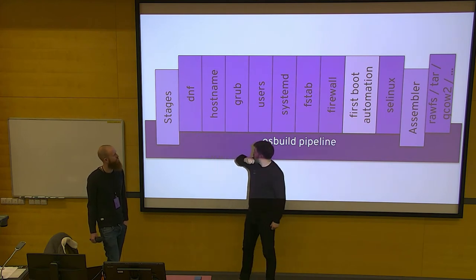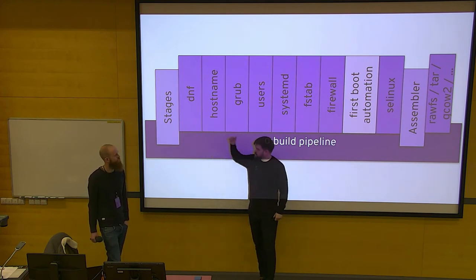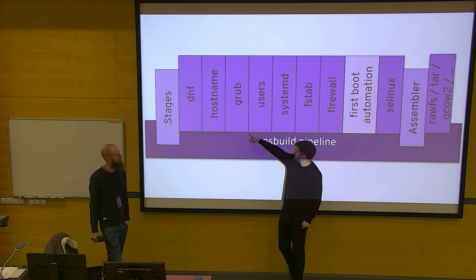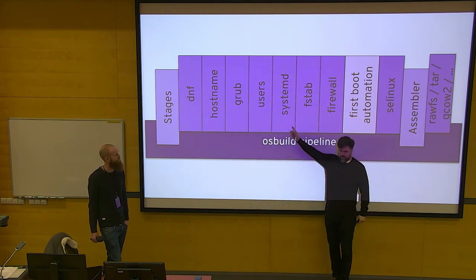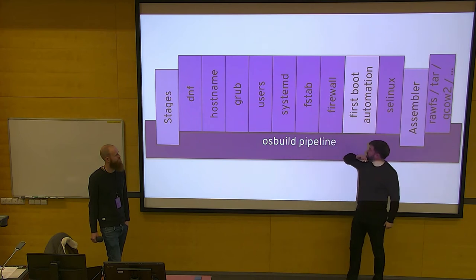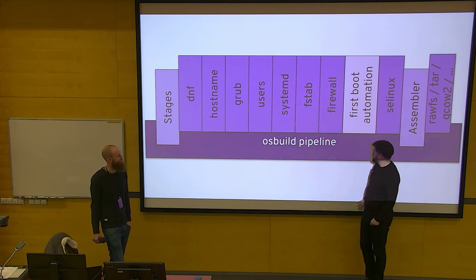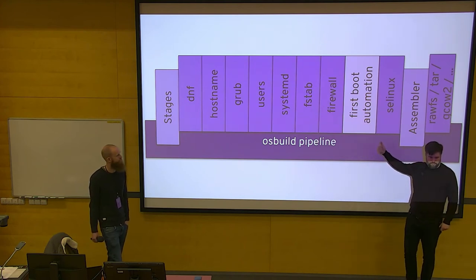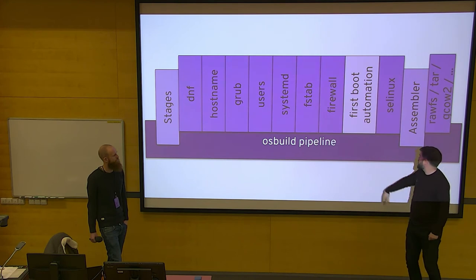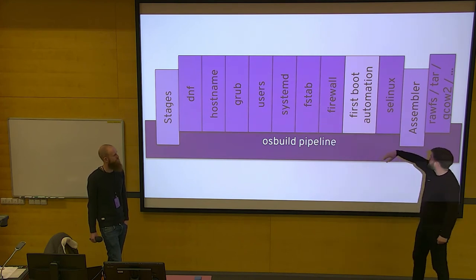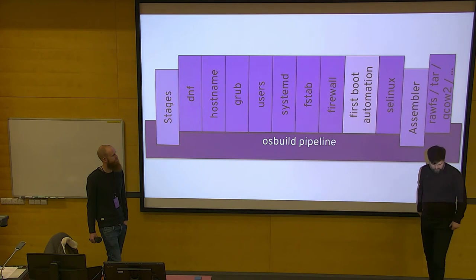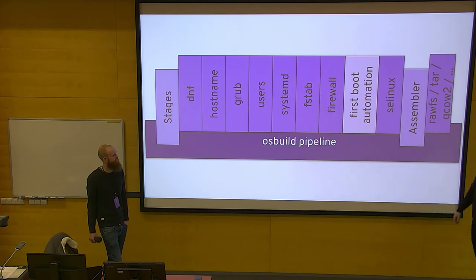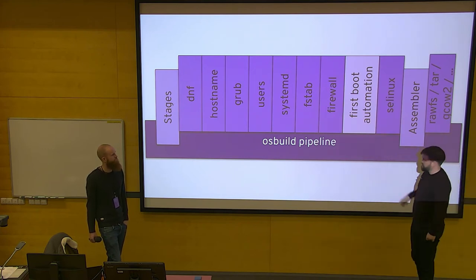So you fill a tree with RPMs, and then maybe you want to change the hostname, install some grub config, set up the users, enable or disable some systemd units, put in the fstab, configure the firewall, and maybe drop in some configuration for the first boot, like Ansible playbooks or whatever else you want. And finally, of course, SELinux — we apply all the labels to the file system. So now what we've produced, after all the stages, is just a file system.